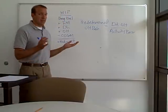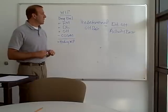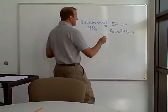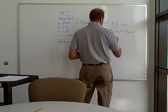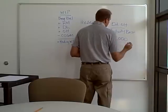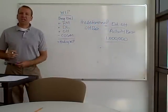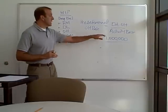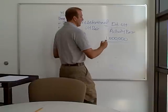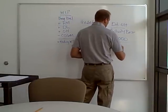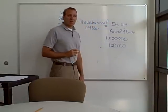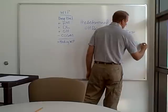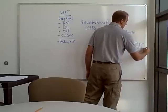For example — just throwing out some numbers — let's say this year we estimate that our overhead is going to be $1 million. We estimate our direct labor hours will be 100,000 during the year. That gives us $10 per direct labor hour.